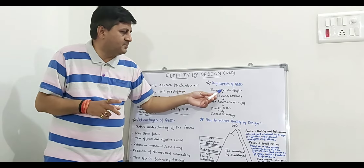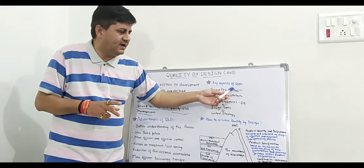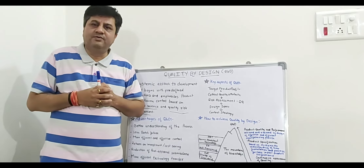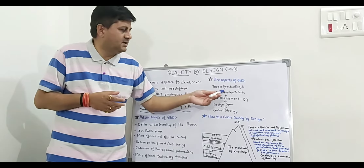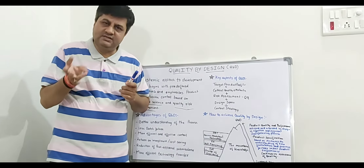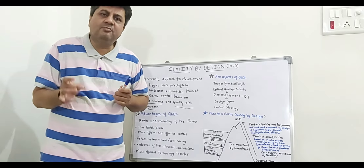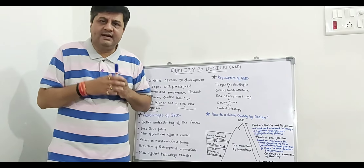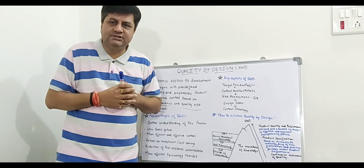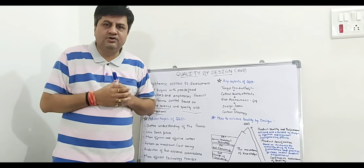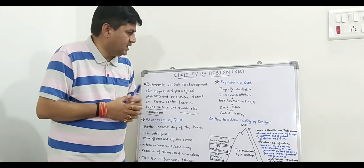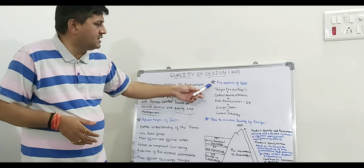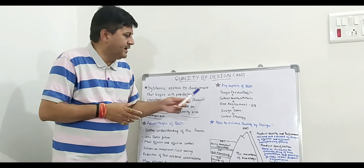Once the Target Product Profile is identified, the second important step is the Critical Quality Attributes. Critical Quality Attributes are defined as physical, chemical, biological, and microbiological properties or characteristics of that product. These should be within the appropriate limit, range, or distribution to ensure the desired product quality.